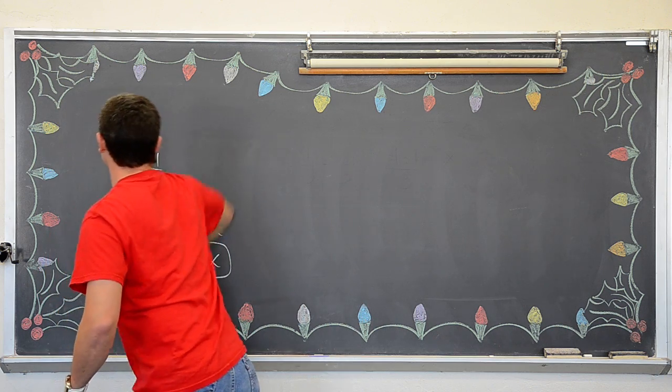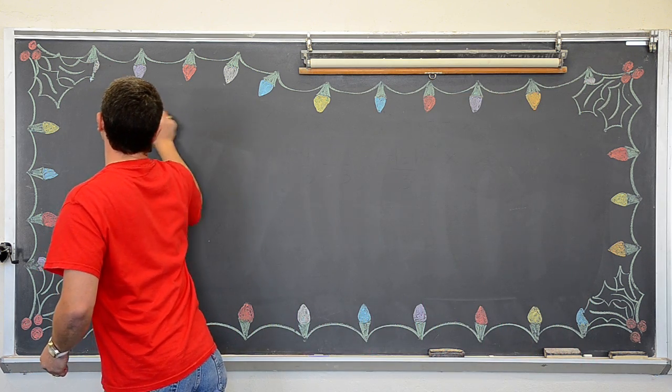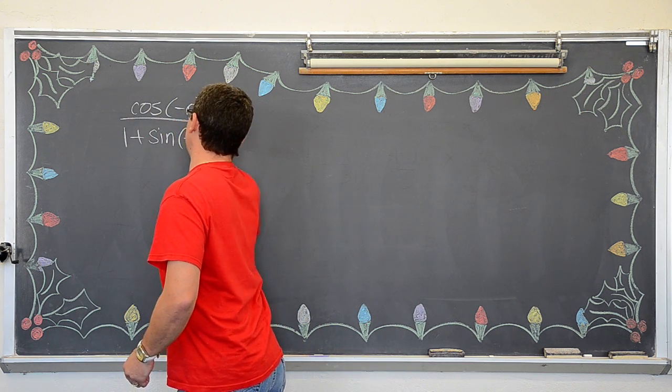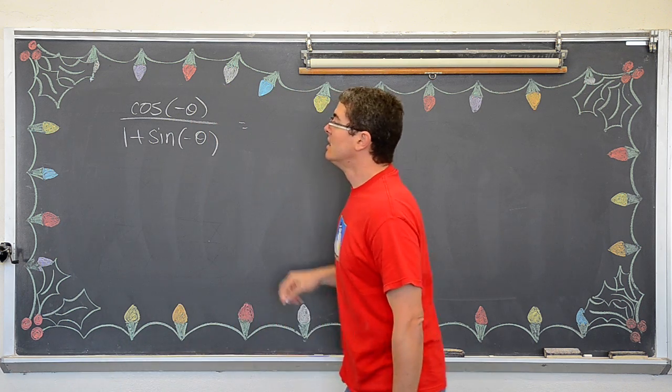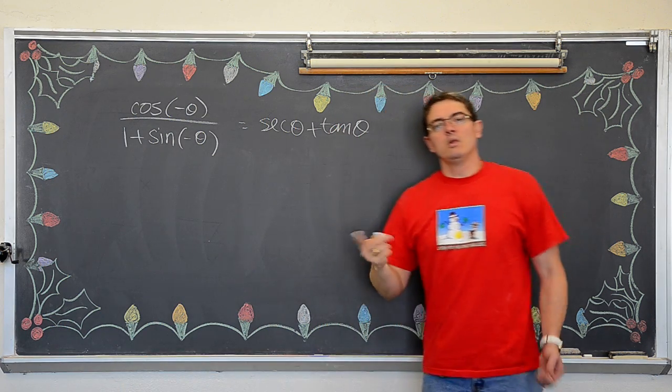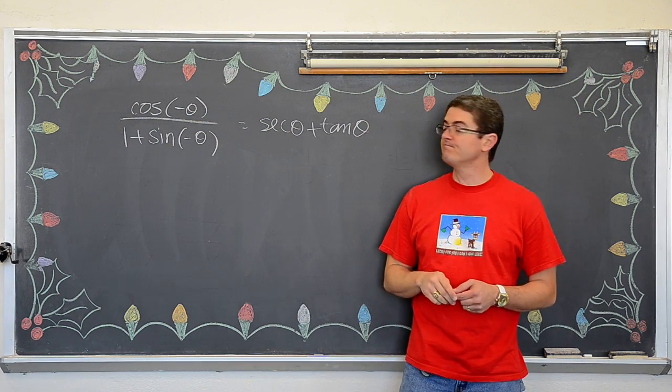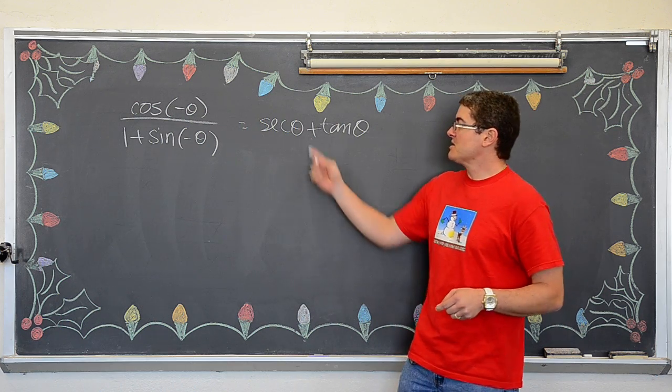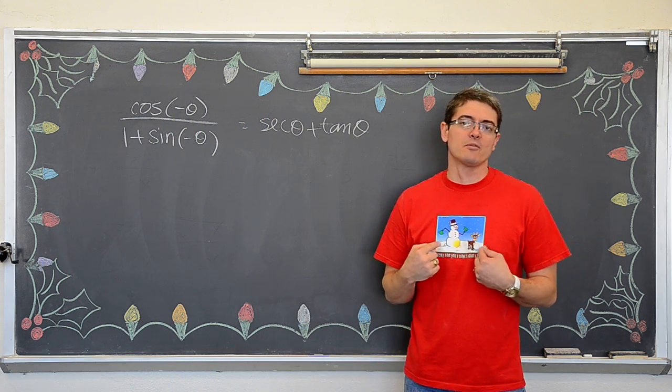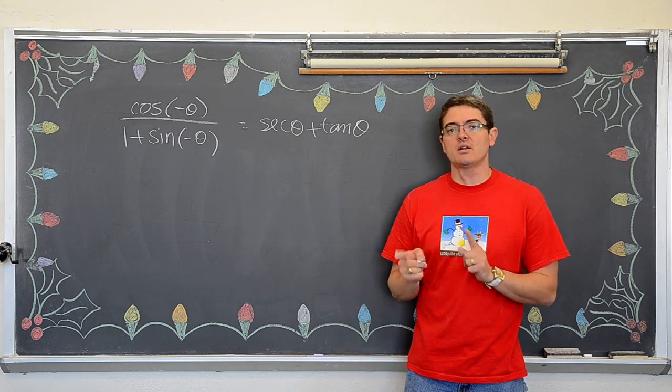Okie dokie. So, the next proof we are going to take a look at, or identity we are going to try and verify, is the cosine of negative theta over one plus the sine of negative theta equals the secant of theta plus the tangent of theta. Well, on this particular proof, or identity that we are going to attempt to verify, my angle measures are not the same. Now, they are very close, but they are not equal. Instead of theta, we have negative theta. So, we have opposite angles. Well, now that talks about a chapter one concept from my book. You might remember it from the previous video, if you are watching these in sequence. We need to discuss the idea of even and odd functions.